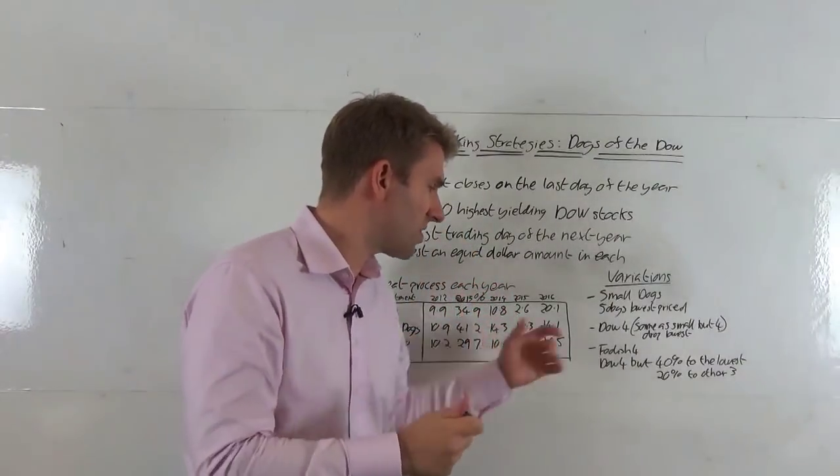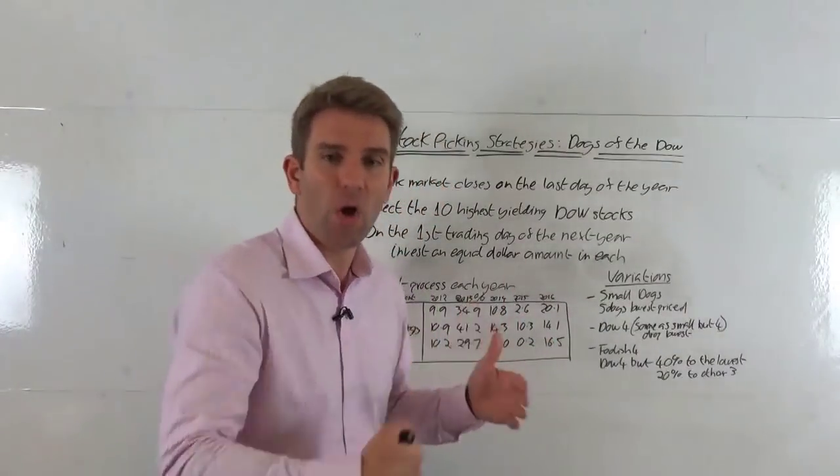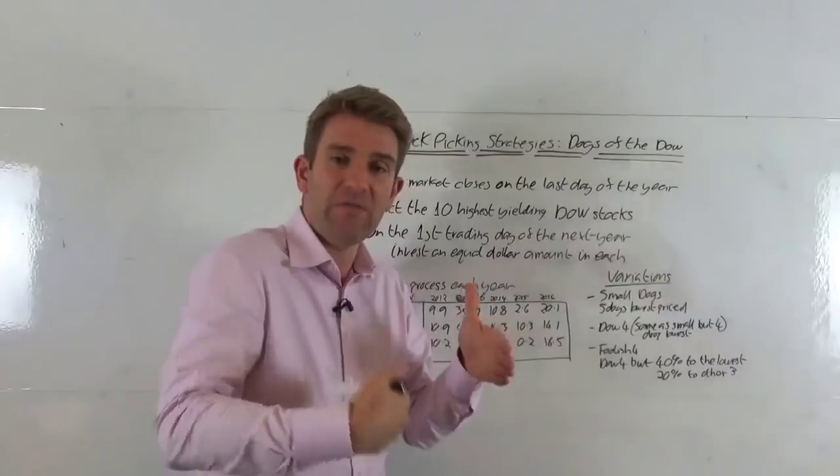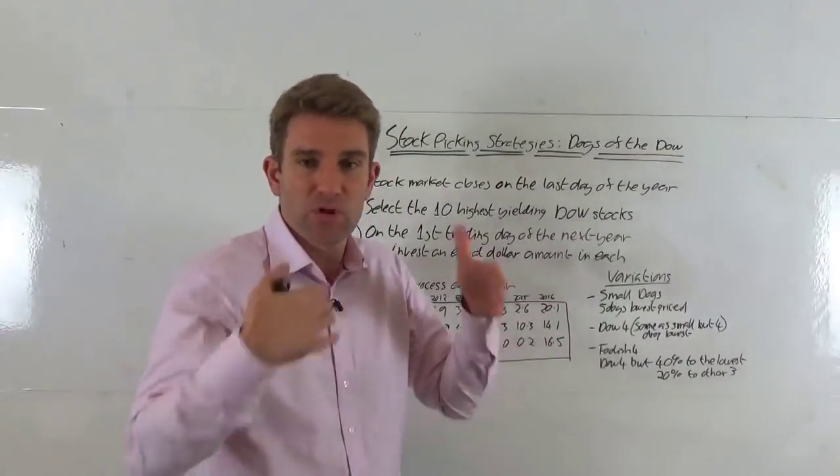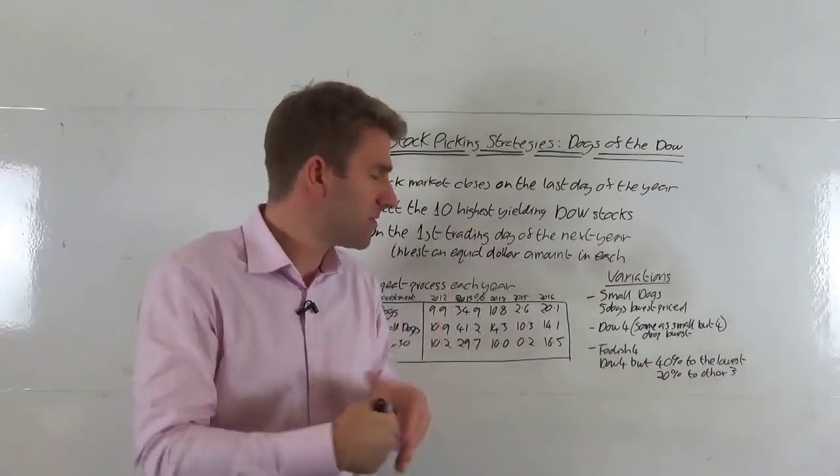So that's the small dogs. Another one is Dow 4. It's the same as the small, but we drop the lowest price. So we just use the bottom five and then drop the very cheapest. So we're just left with those four and allocate capital equally to all those four.